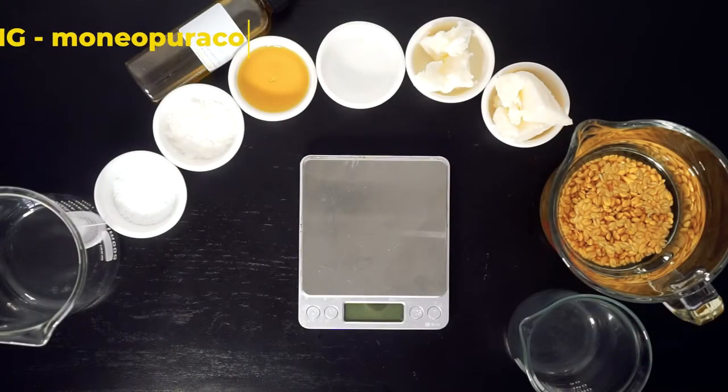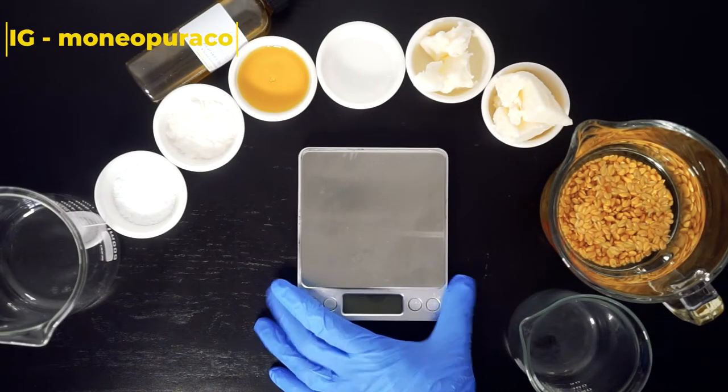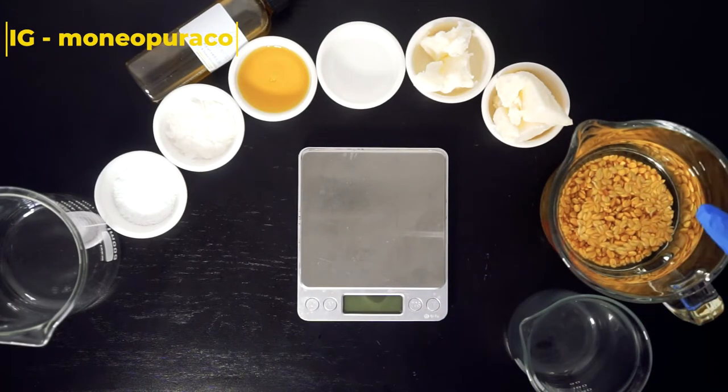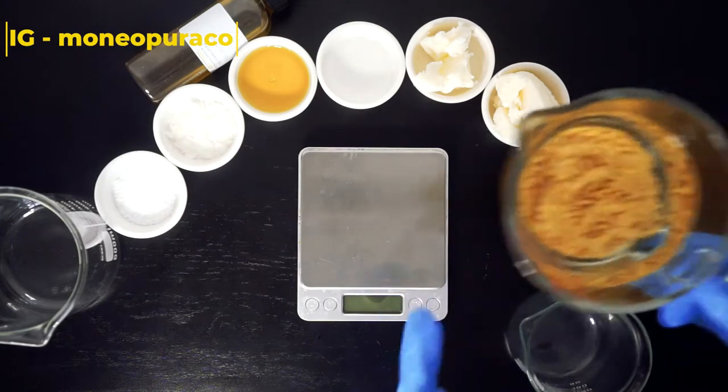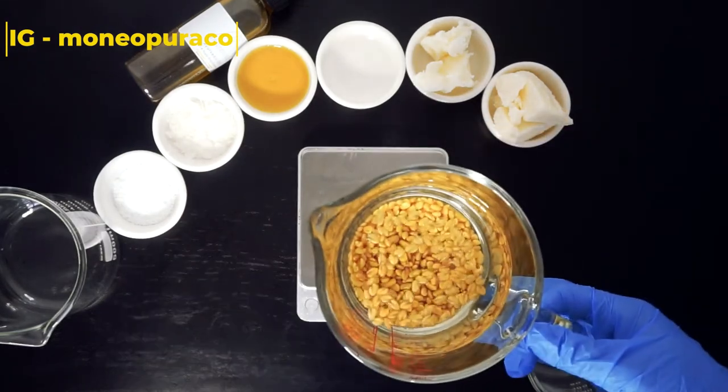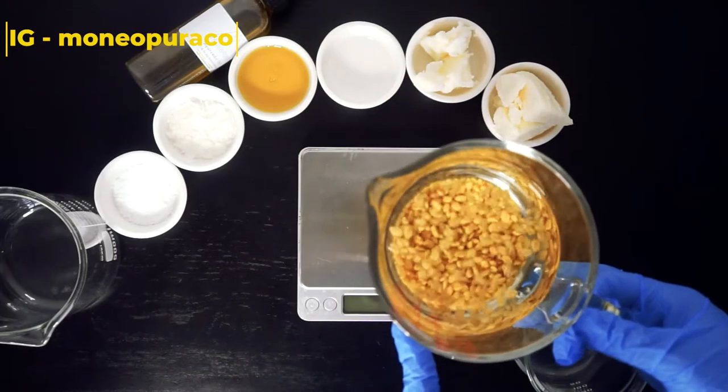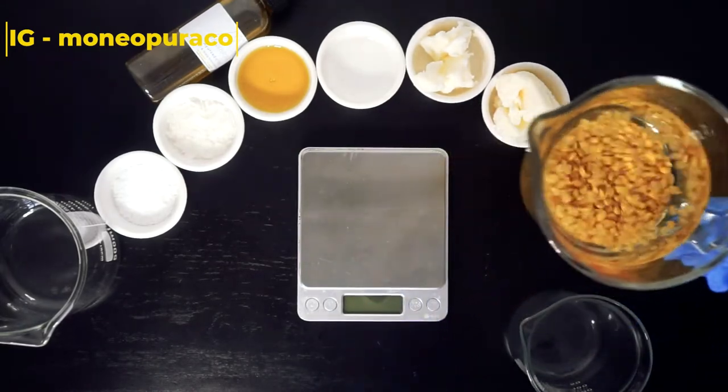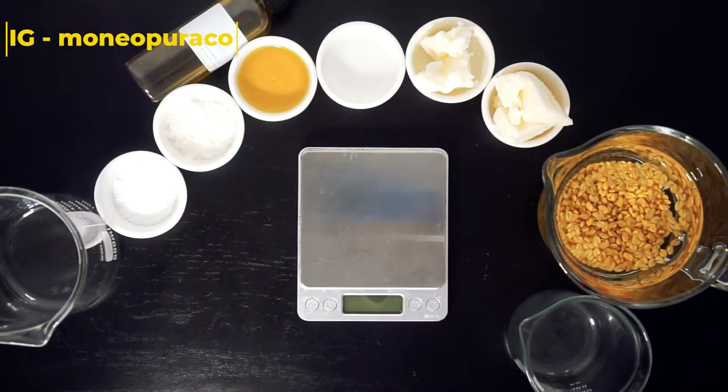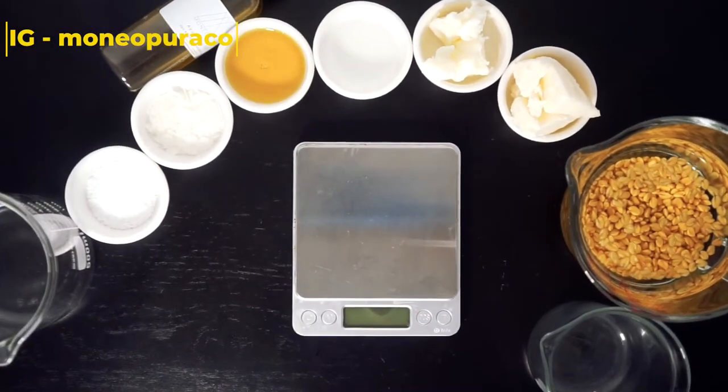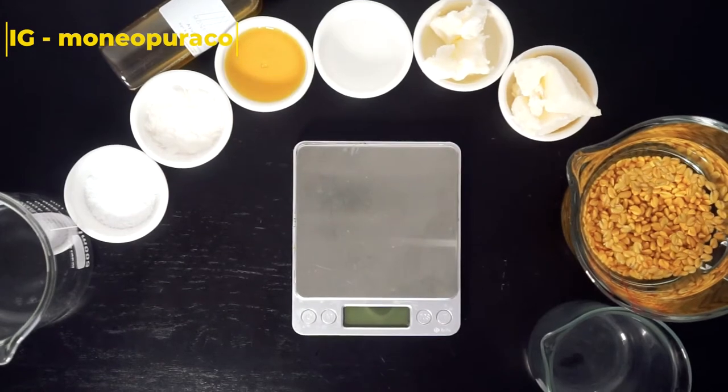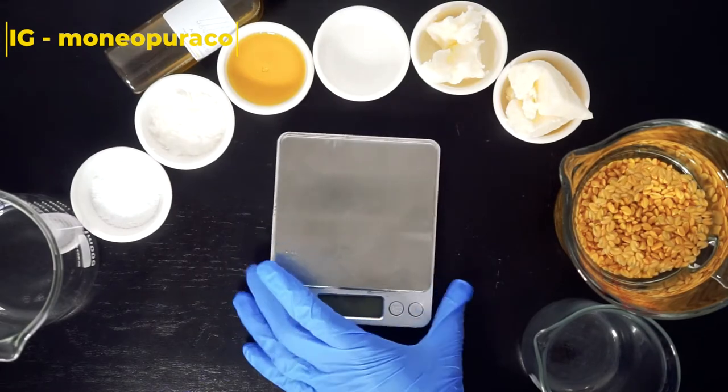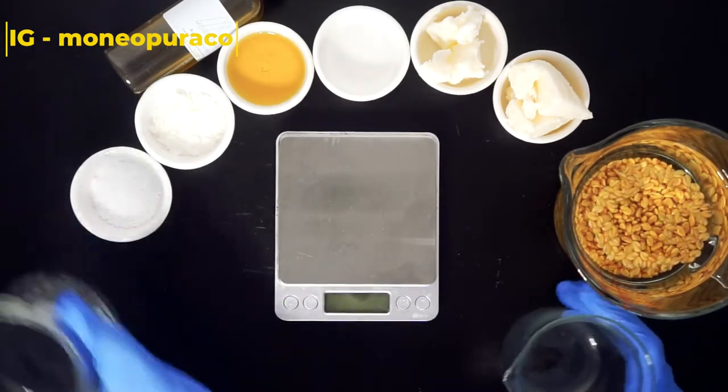To make our fenugreek leave-in conditioner you're going to need your fenugreek liquid. I have soaked some fenugreek seed in distilled water for 24 hours. If you want to know how I did this, go ahead and watch my fenugreek leave-in spray video. I will link it in the description box below. It's the same process that I'm using to make my fenugreek leave-in conditioner.